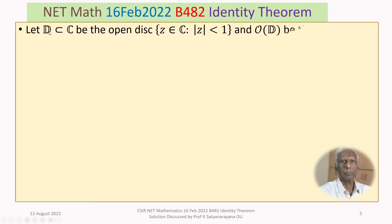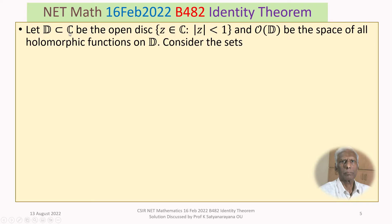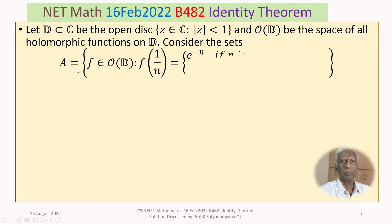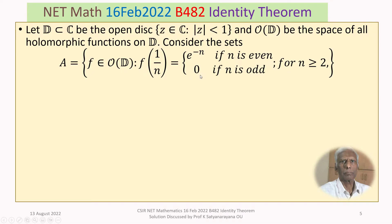The problem: let D be an open disk, the set of Z belonging to the complex numbers C such that mod Z is less than 1. Let O of D be the space of all holomorphic functions on the open disk D. Consider set A, the set of all F belonging to O of D such that F of 1/n equals e to the power minus n if n is even, and F of 1/n equals 0 if n is odd, for n greater than or equal to 2.